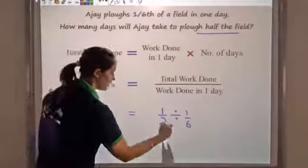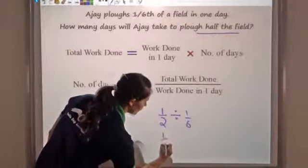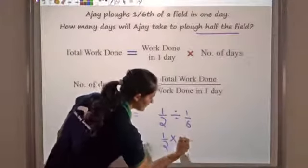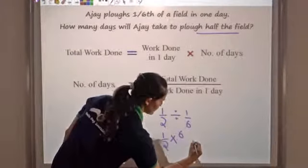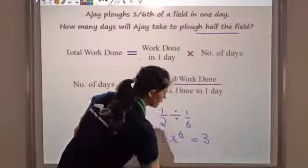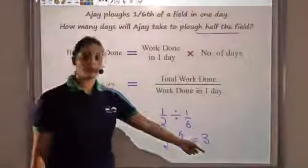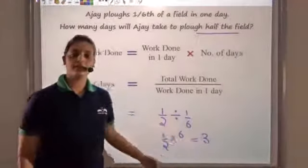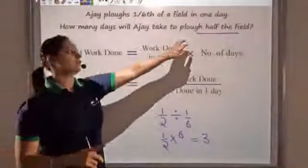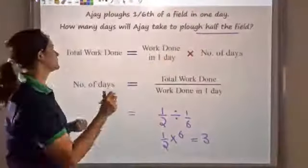Dividing: one half divided by one sixth — reciprocating gives one half times six, which equals three. So the number of days comes out to be three; he would take three days to plow half the field.